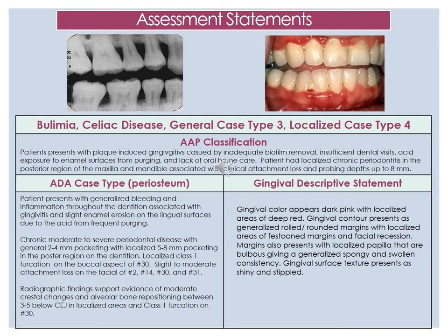This slide combines all three of our assessment statements. Kim has bulimia and celiac disease. She is a general case type 3 and a localized case type 4. Her AAP classification is that she presents with plaque-induced gingivitis caused by inadequate biofilm removal, insufficient dental visits, acid exposure to enamel surfaces from purging, and a lack of oral home care. The patient has localized chronic periodontitis in the posterior region of the maxilla and mandible, associated with clinical attachment loss and probing depths up to 8 millimeters.